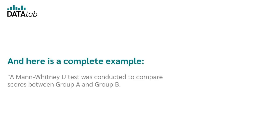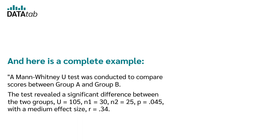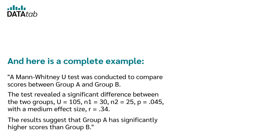Here is a complete example: 'A Mann-Whitney-U test was conducted to compare scores between group A and group B. The test revealed a significant difference between the two groups, U = 105, N1 = 30, N2 = 25, p = 0.045, with a medium effect size r = 0.34. The results suggest that group A has significantly higher scores than group B.'